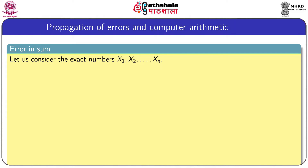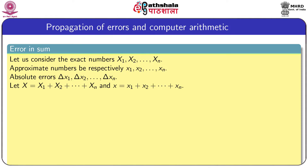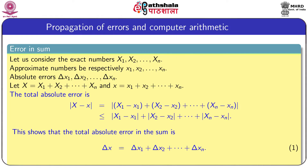Consider n exact numbers X1 to Xn and their corresponding approximate numbers x1 to xn. Let delta x1 up to delta xn be the absolute errors in the corresponding measurements. Let capital X represent the sum of n exact numbers and small x represent the sum of n approximate numbers. Then the absolute error is capital X minus small x. The absolute error in the summation of n numbers equals the sum of the absolute errors in individual numbers, given by equation 1.